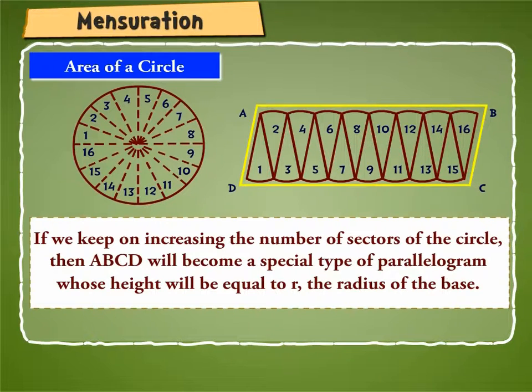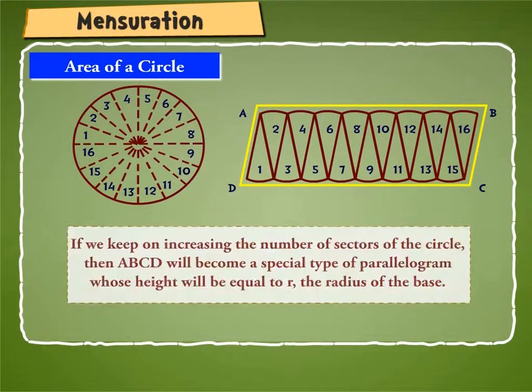If we keep on increasing the number of sectors of the circle, then ABCD will become a special type of parallelogram whose height will be equal to r, the radius of the base.